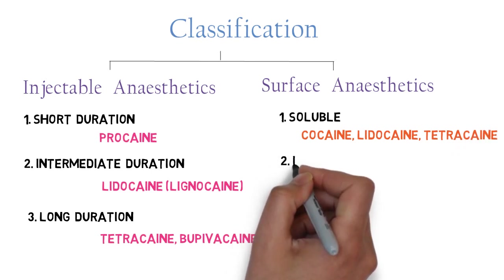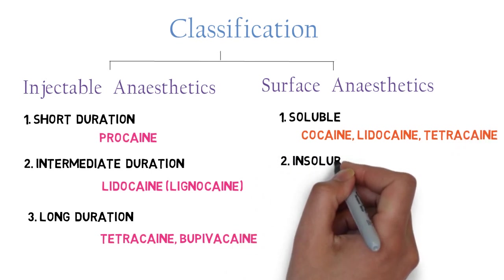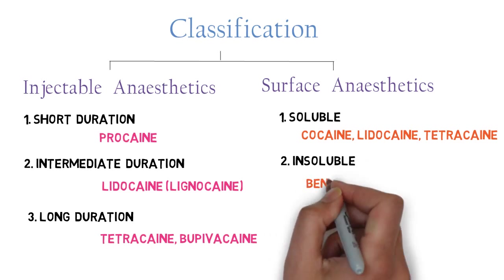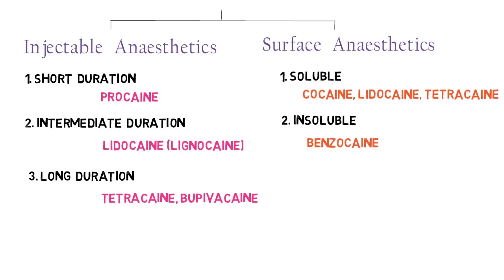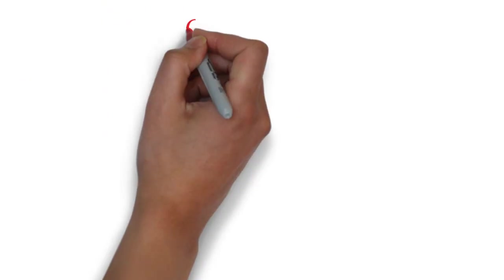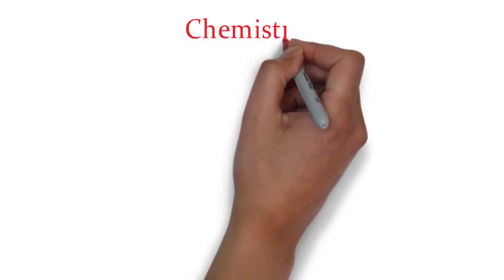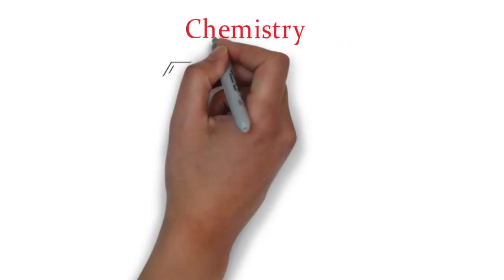Surface anesthetics are divided into two categories: soluble and insoluble. Examples of soluble surface anesthetics are cocaine, lidocaine, and tetracaine. The insoluble surface anesthetic is benzocaine.